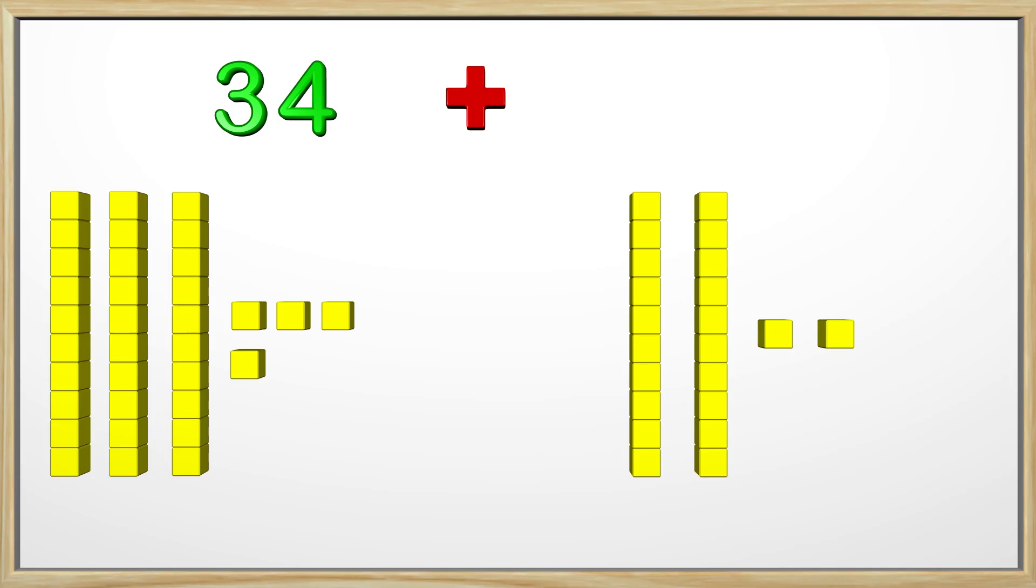We need to add these groups of blocks together to get the answer. We already know we have 34 blocks on the left. 3 tens blocks and 4 ones blocks. On the right we have 2 tens blocks which is 20 and 2 ones blocks. We have 22. Now let's solve the problem.